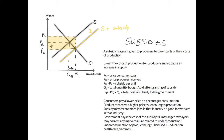The last form of government intervention to represent diagrammatically is subsidies. Subsidies are basically the opposite of indirect taxes — a subsidy is a grant given to producers to cover part of their costs of production. This lowers their costs and causes an increase in supply. Once the subsidy is granted, the supply curve shifts from S to S plus subsidy — a shift to the right.